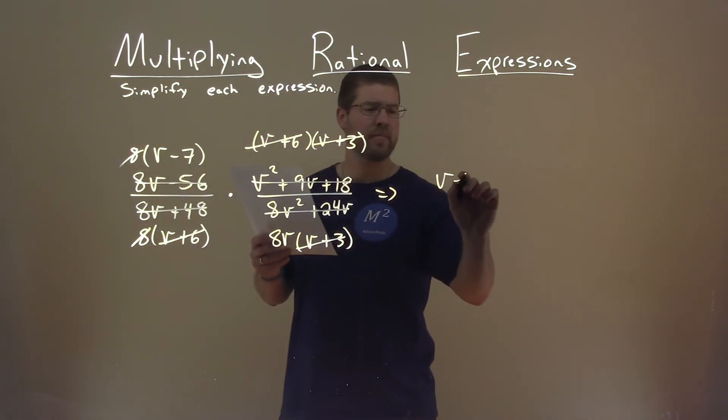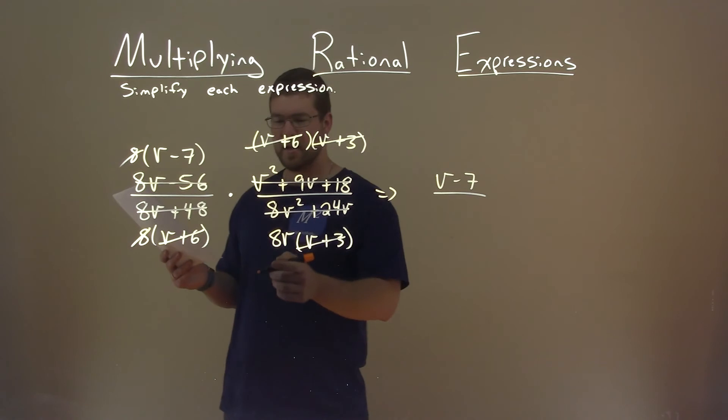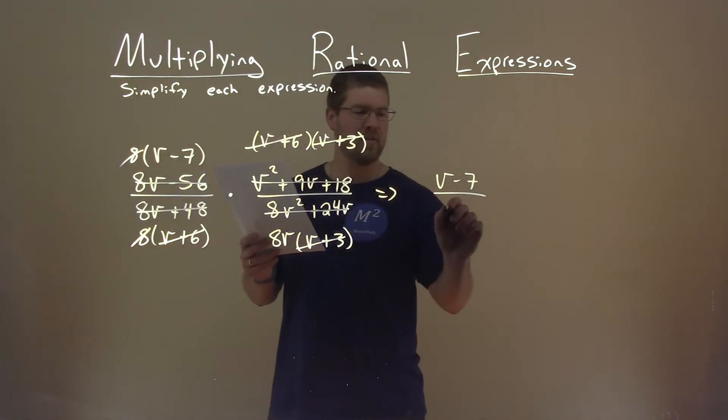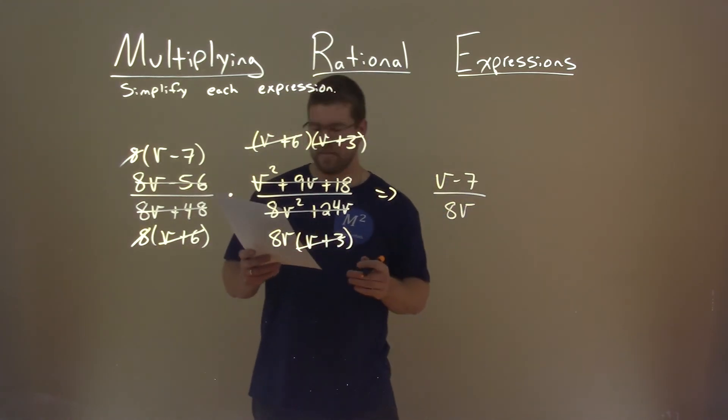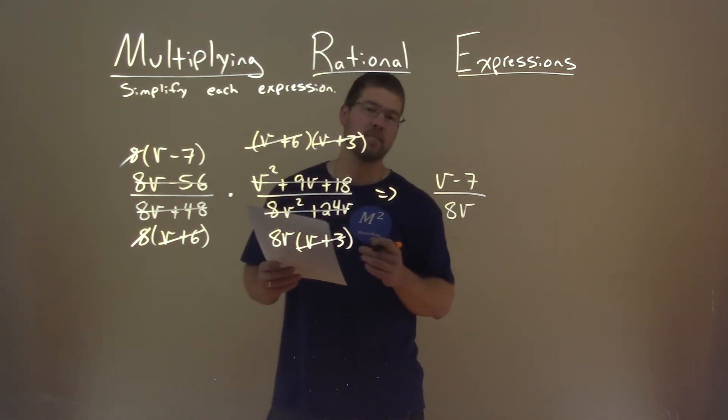v minus 7 comes over. That's the only thing left in the numerator. The denominator, we're only left with an 8v. So that's it. v minus 7 divided by 8v is our final answer.